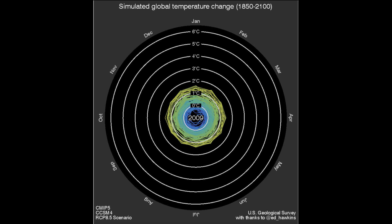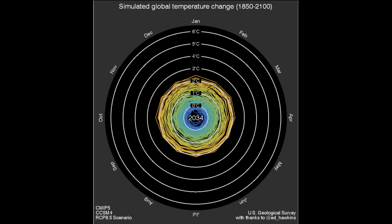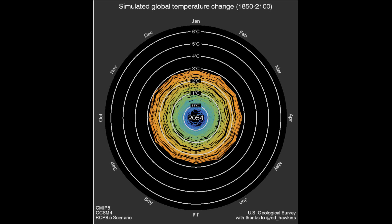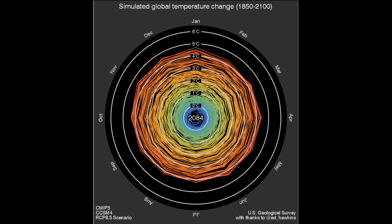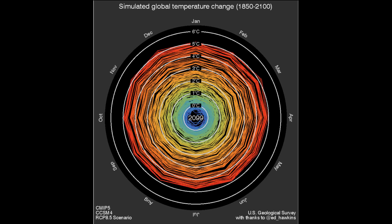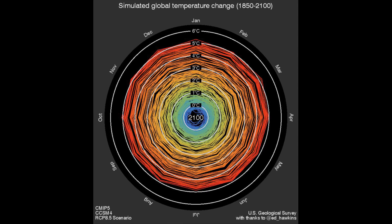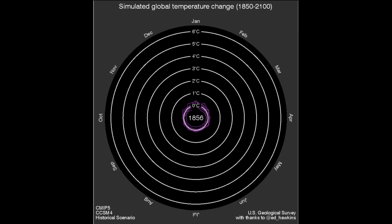This is all based on the climate models that have already occurred up until 2016, and also what would happen if global temperatures remain constant — so it's not adding extra. You can see that by 2030 we hit three degrees, in 2050 we hit four degrees, in 2070 we're hitting five degrees above the norm, and in 2100 we're at five degrees.